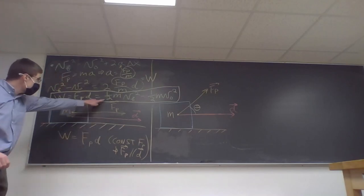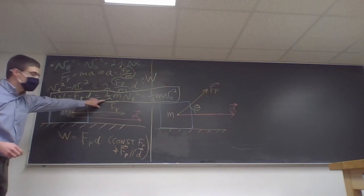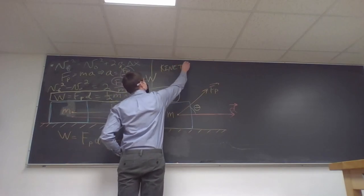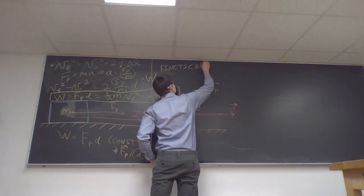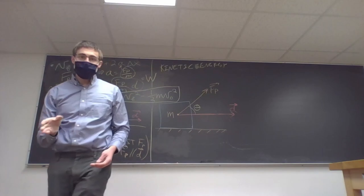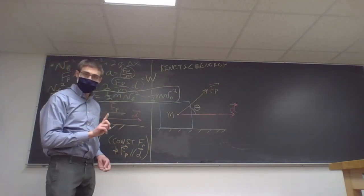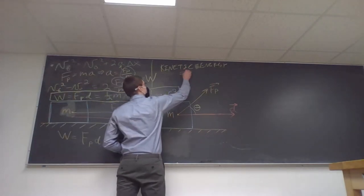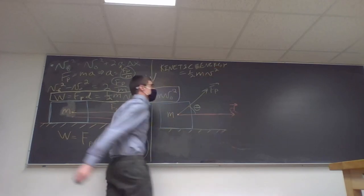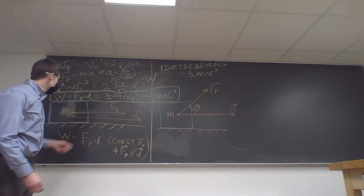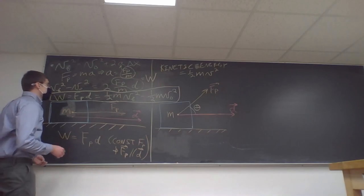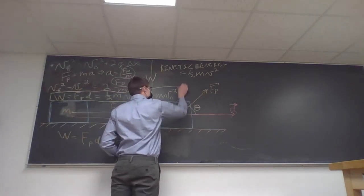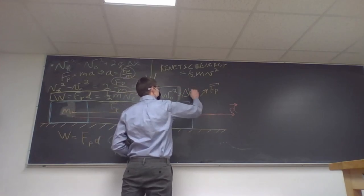This is interesting — we've arrived at kinetic energy. Kinetic energy is the energy due to motion: KE = ½·m·v². Mechanical energy comes in two parts: potential energy (discussed later) and kinetic energy. So work equals the change in kinetic energy: W = ΔKE, meaning the final kinetic energy minus the initial kinetic energy.